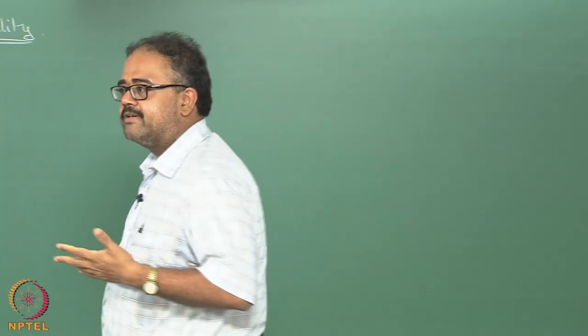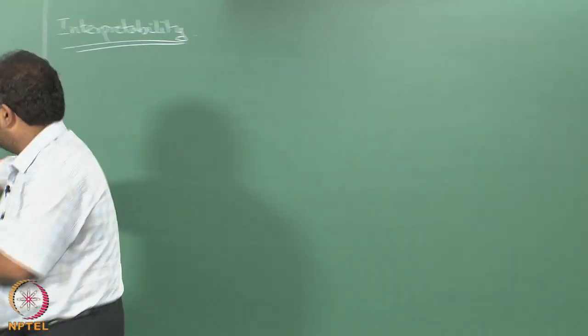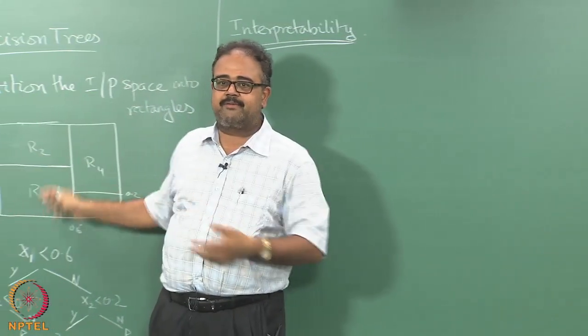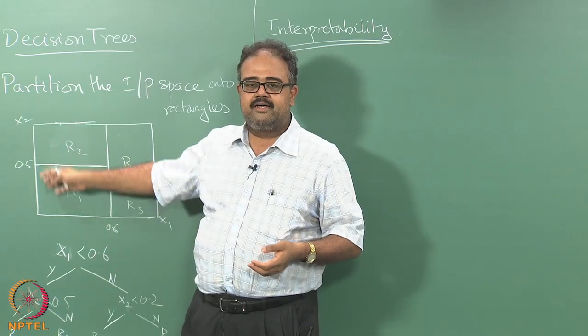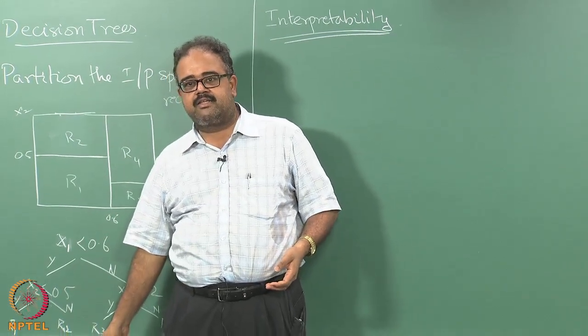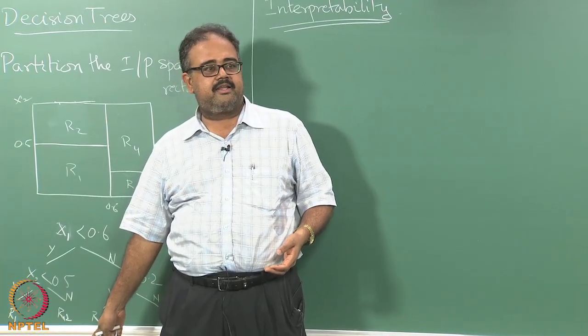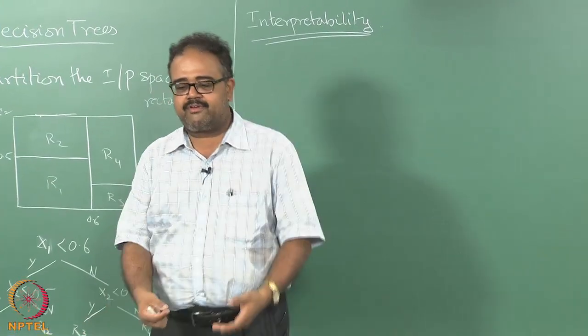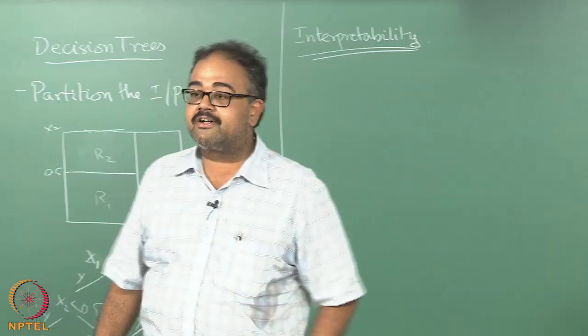So what about decision trees? It can be a universal approximator as well. I can just keep dividing and subdividing this space. It's just that my tree might become very, very large.